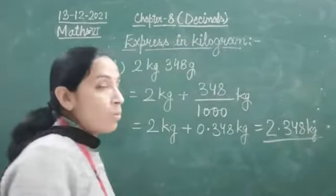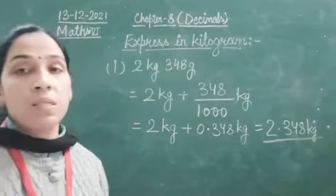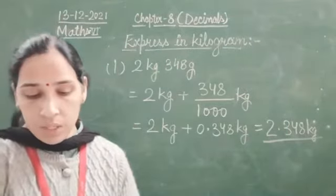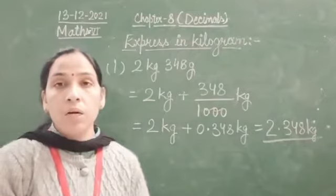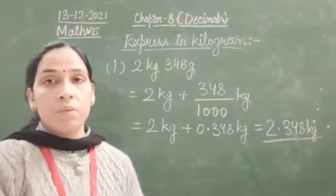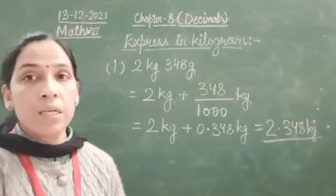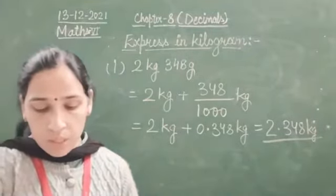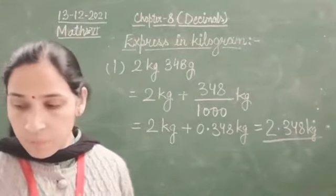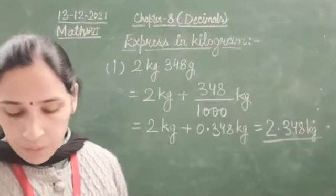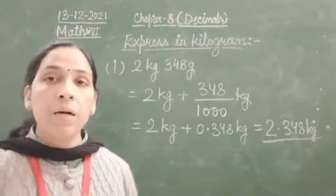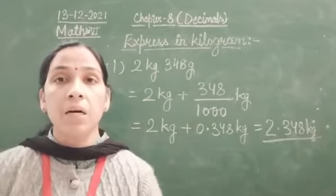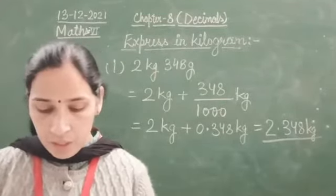This is the way to express it in kg. Similarly, when you are representing it in millimetres or kilometres then also you can do it. Then, for rupees and paisa — the paisa part will be divided by 100 and then do the addition.